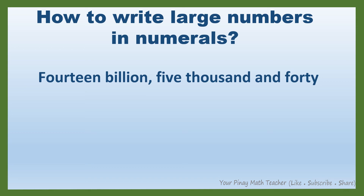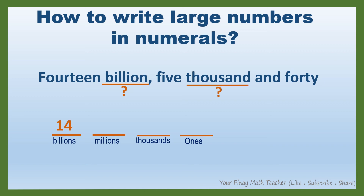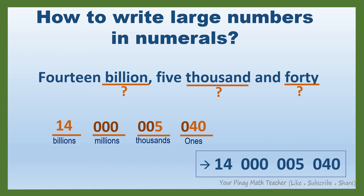Last example: 14,000,005,040. In this number, the highest period is the billions period, so it follows that we have billions, millions, thousands, and ones periods. How many billions are there? There are 14. And there are 5,000 thousands and 40 ones. In 5,000, we need to add two zeros. In 40 ones, we need to add one zero. But in the millions period, we should not leave it blank — we have to put three zeros. And this is the numeral for 14,000,005,040.